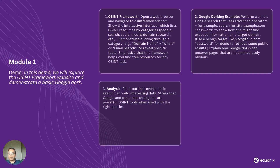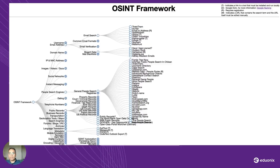Let's open a browser and go to osintframework.com. As soon as you go to this link, you find the whole framework and various different categories. You can click on any of these categories and go to subcategories that allow you to look for specific information about a user, a company, public records, business records, transportation, tools, or training. There are endless possibilities here.